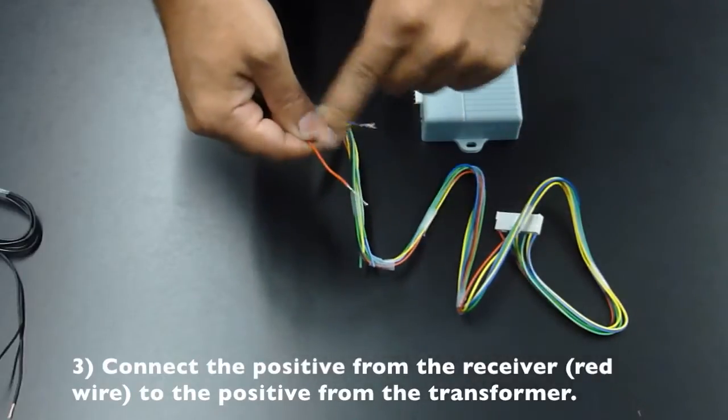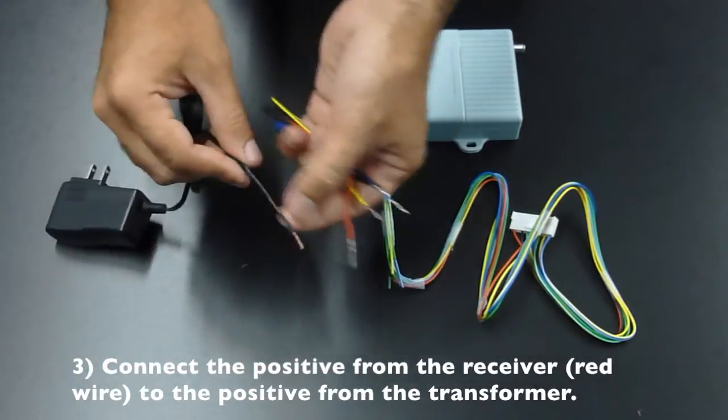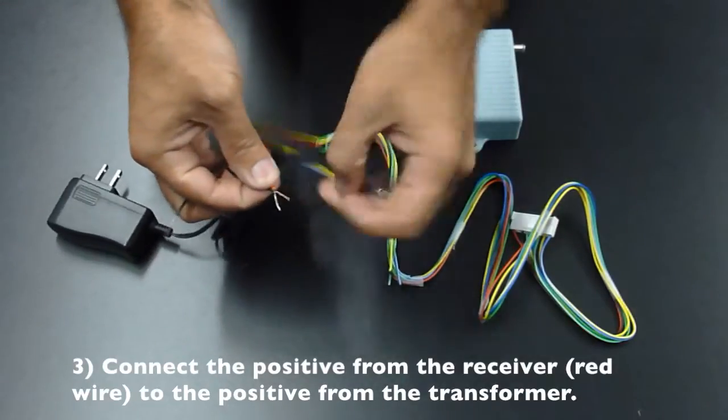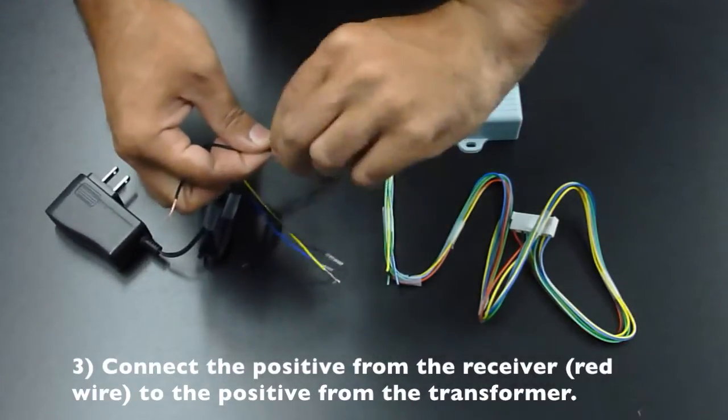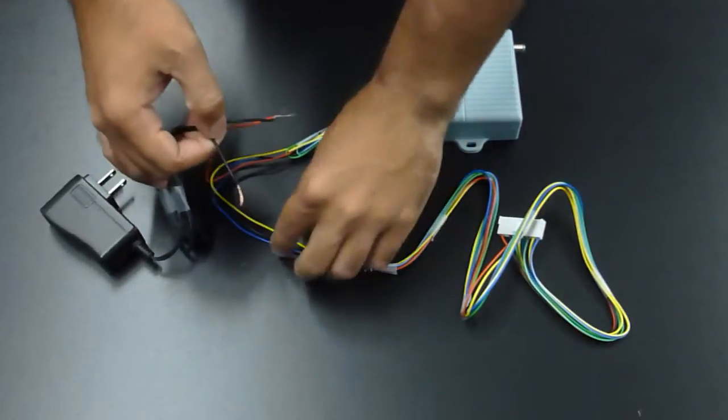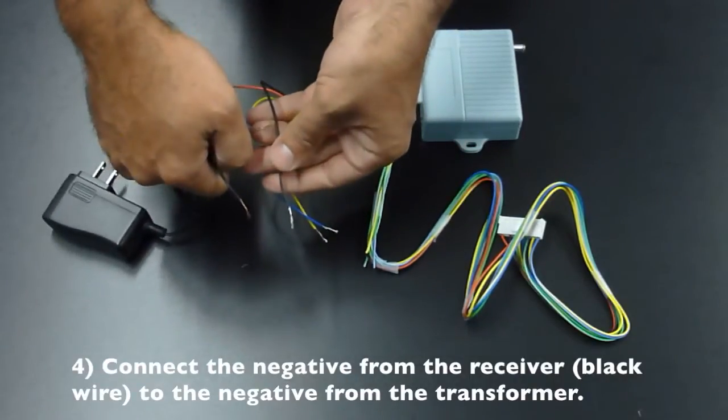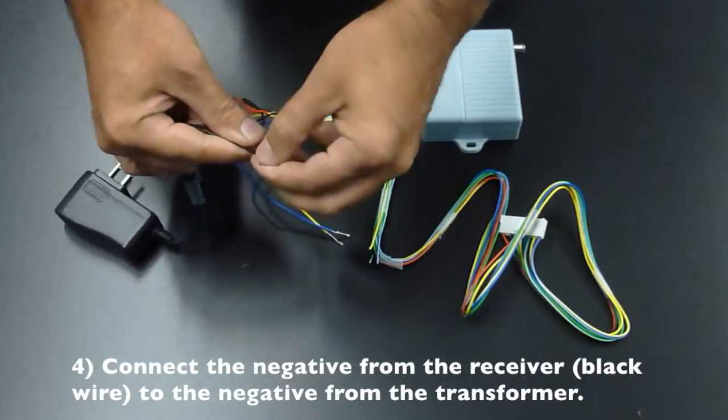Connect the positive from the receiver, which is your red wire, to the positive from the transformer. Connect the negative from the receiver, which is your black wire, to the negative from the transformer.